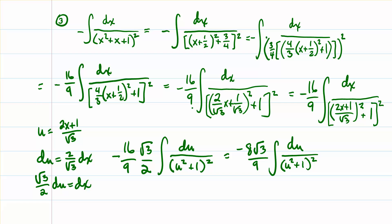Now we have an even simpler integral, ready to go on to the next phase of the transformation into something that we can find an antiderivative for. To do this, we're going to invoke a trig substitution at this point. We're going to let tangent of θ equal u.